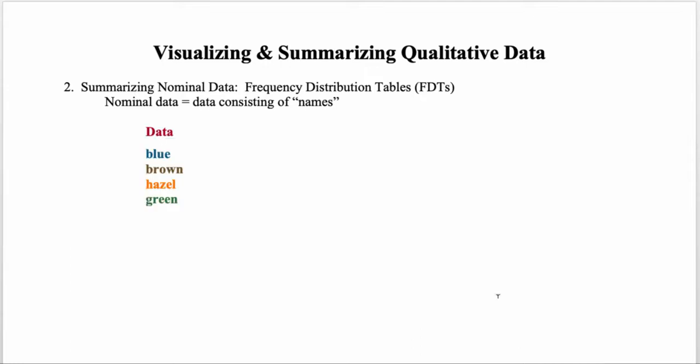We'll start by listing all of the values observed for this variable. There were four observations: individuals with blue eyes, individuals with brown eyes, individuals with hazel eyes, and individuals with green eyes. There were 12 individuals with blue eyes, 22 with brown eyes, 2 with hazel eyes, and 4 with green eyes.